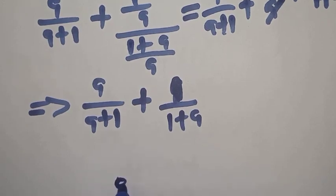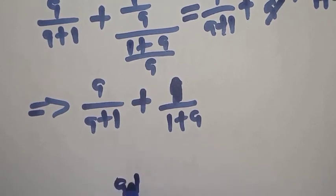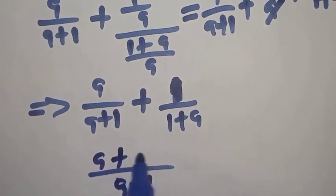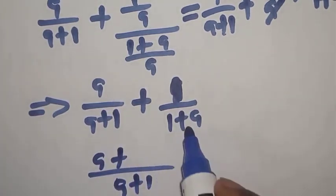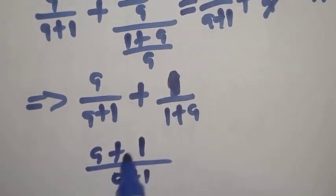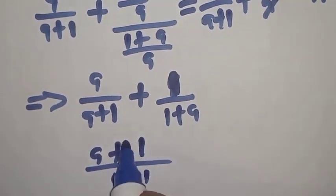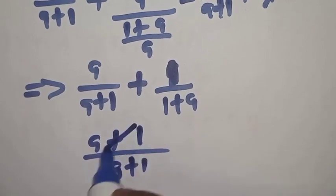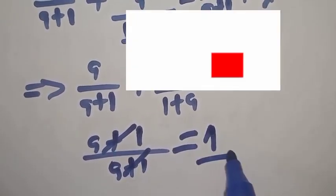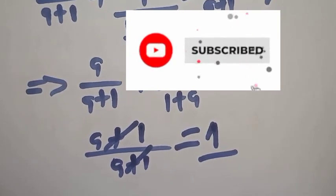We have A plus 1 over. A plus 1 goes in, we have 1 times A is A, plus 1 plus A goes in A plus 1 is 1, 1 times 1 is 1. Then A plus 1 over A plus 1, this one will cancel. It's equal to 1. That is our final answer.